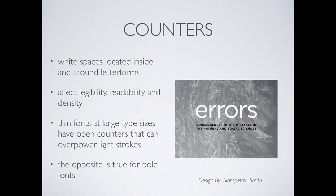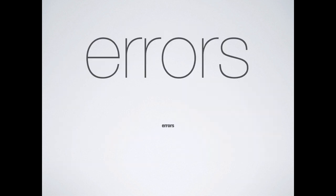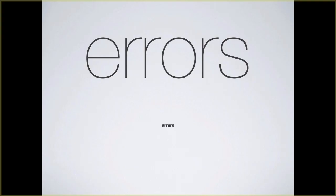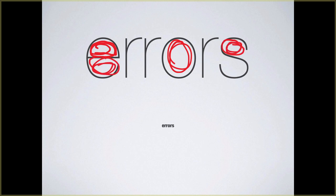Counters are white spaces located in and around letter forms. They affect legibility, readability, and density of a font. Thin fonts at really large sizes have open counters — big spaces — which can make them hard to read and overpower the thin strokes. The opposite is true for really bold fonts: a small bold font is much harder to read because the counters aren't big enough. You can see in the lower example it's dense and hard to read; in the upper form there's a lot of open space.